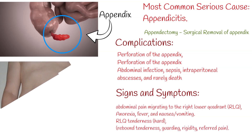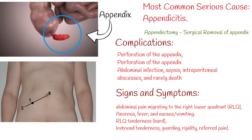Abdominal pain migrating to the right lower quadrant, or RLQ. Pain from appendicitis may begin as a dull pain around the navel; after several hours, pain will usually transition towards the right lower quadrant where it becomes localized. Other symptoms include anorexia, fever, and nausea and vomiting.